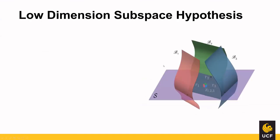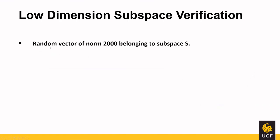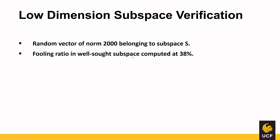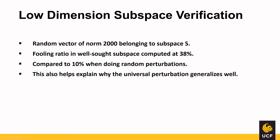To visualize this, the paper hypothesizes a low-dimensional subspace S. Data points x_i and their adversarial perturbations all lie near the same region, meaning any perturbation belonging to subspace S is likely to fool data points. To verify this, they selected a random vector of norm 2000 belonging to S and computed a fooling ratio of 38%, compared to just 10% for random perturbations. This confirms that a random direction in S outperforms random perturbations, helping explain why the universal perturbation generalizes so well.